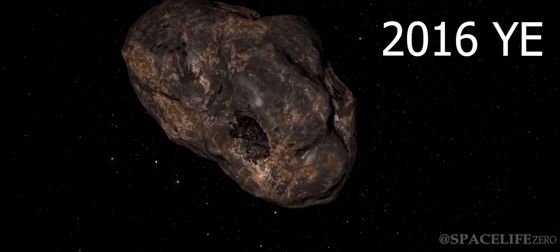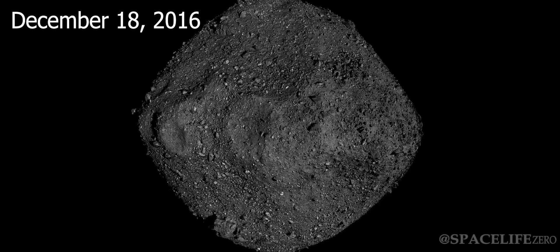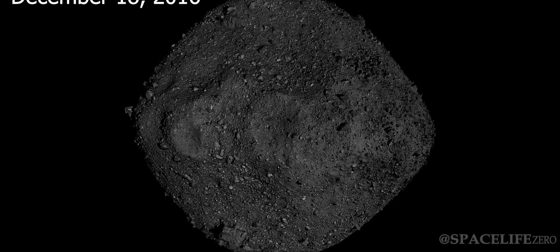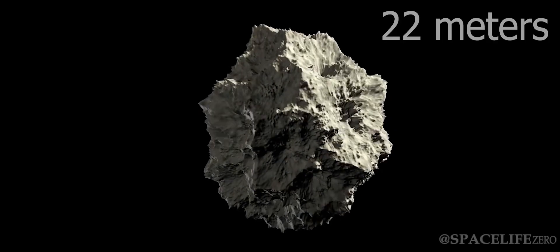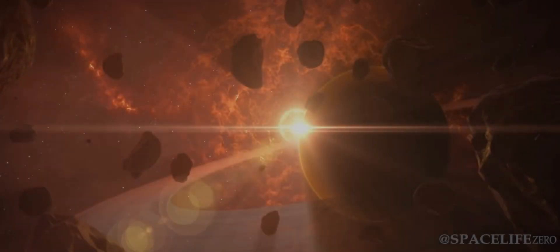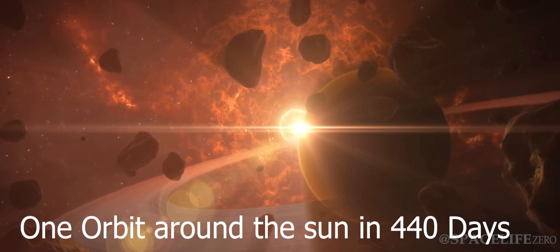Asteroid 2016-YE was discovered on December 18, 2016. It has a diameter of 22 meters and it makes one orbit around the Sun in 440 days.